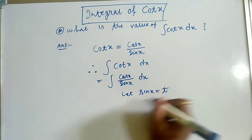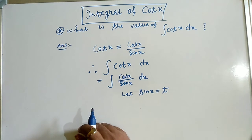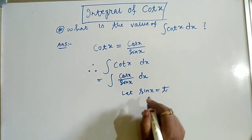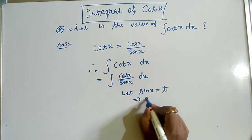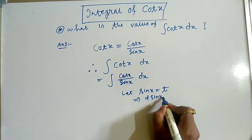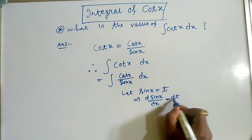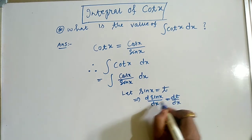Let us take sin(x) equals t. So both sides, take the derivative with respect to x. The derivative of sin(x) with respect to x equals dt by dx.